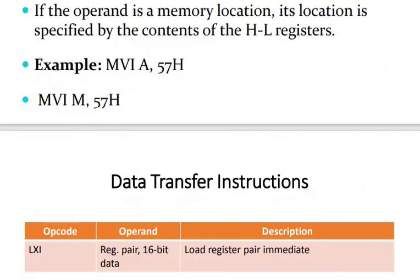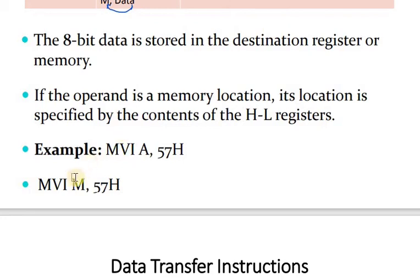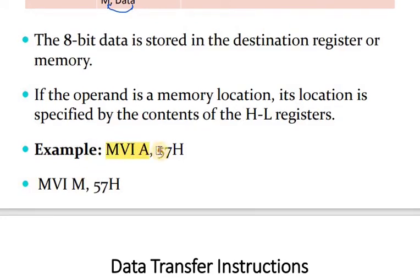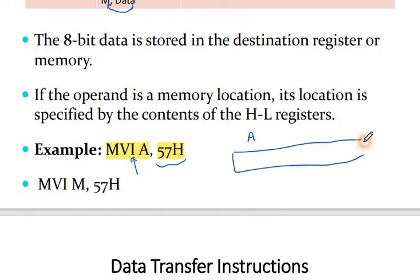Here is an example: MVI A, 57H. This is a move immediate instruction, so 57H is not a memory address — it is direct data. So the value 57H is stored in the accumulator. In binary, 57H is 0101 0111, and this direct data is stored in the accumulator.